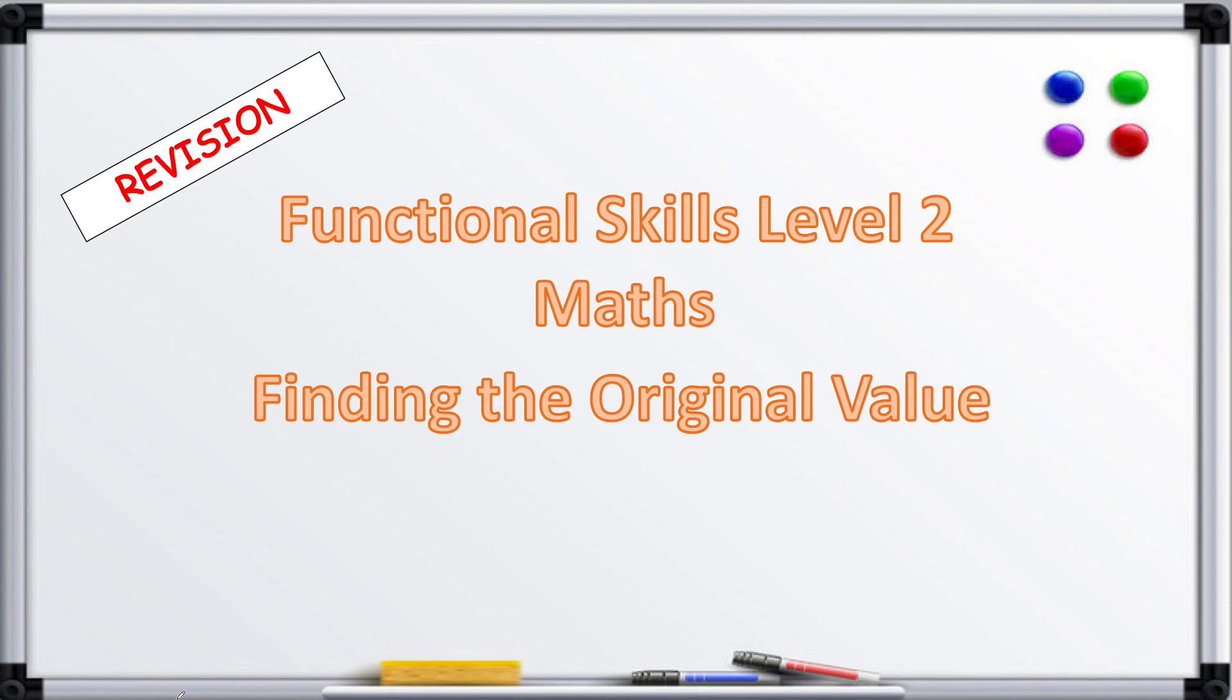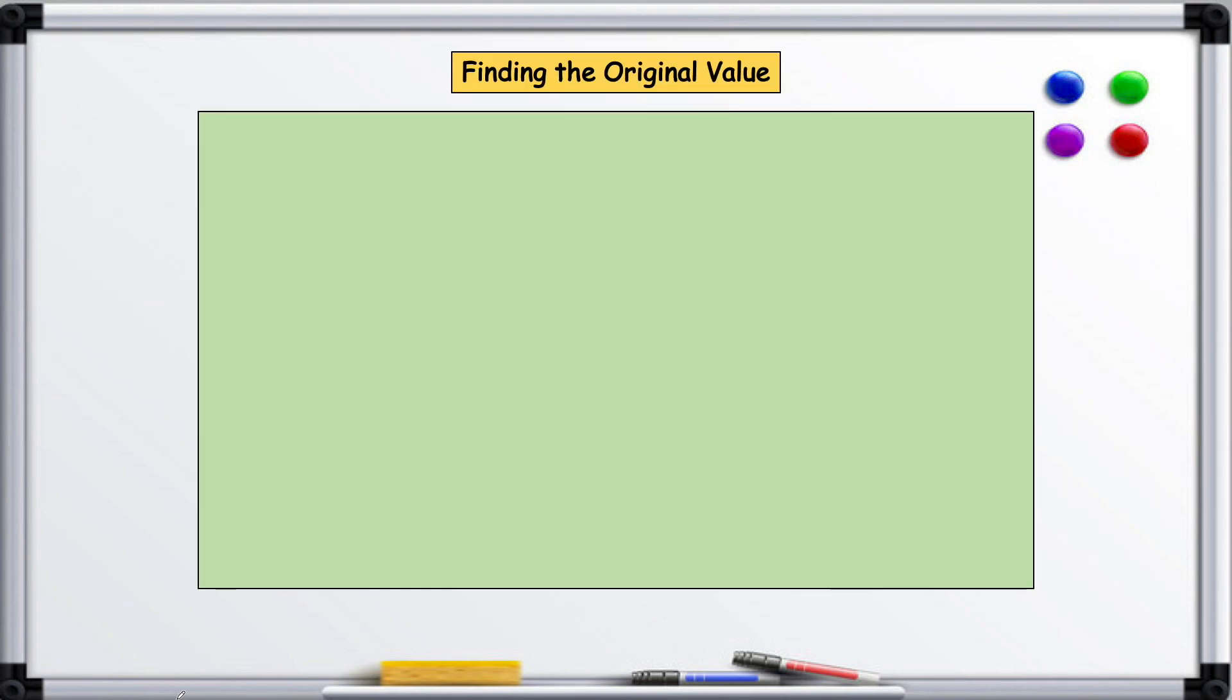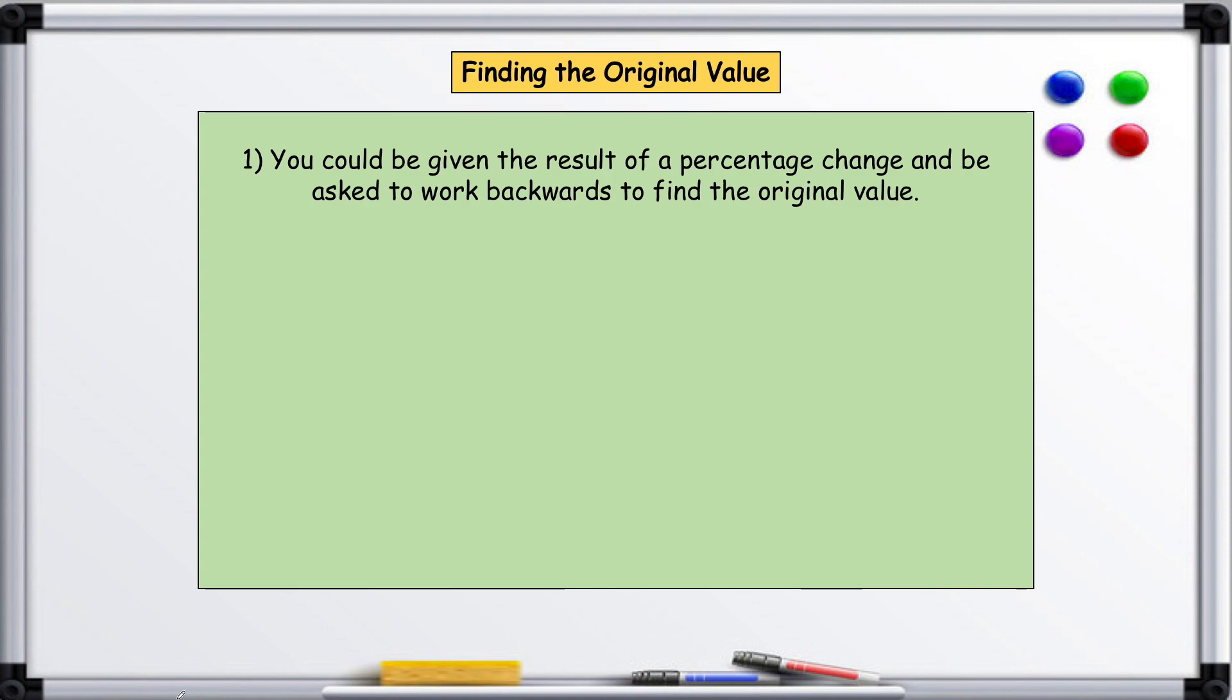Finding the original value: you could be given the result of a percentage change and be asked to work backwards to find the original value. First, write the amount that you're given as a percentage of the original value.